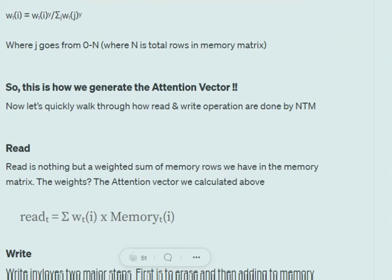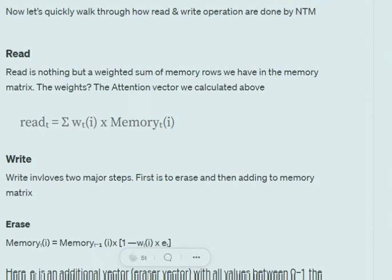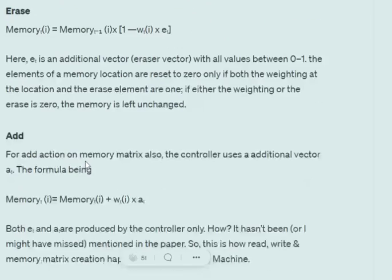Now let's understand how read and write operations are performed. The read operation is simply the summation of weight_i × memory_i over all rows. For example, with five rows: w1×M1 + w2×M2 + w3×M3 + w4×M4 + w5×M5. It is a weighted summation of all memory rows using the attention weights we calculated.